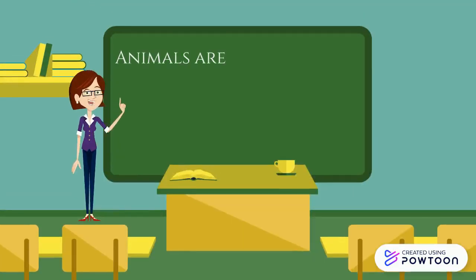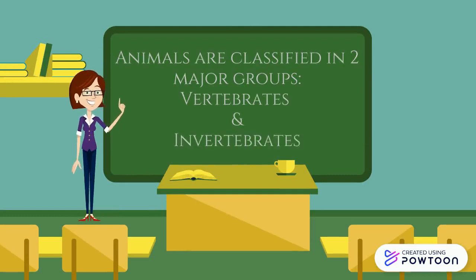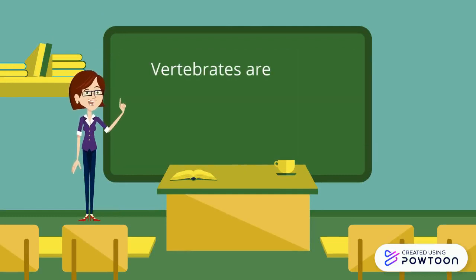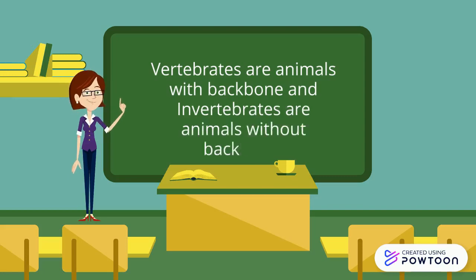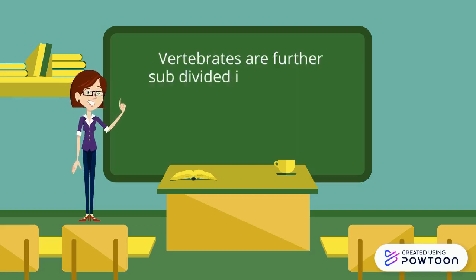Animals are classified in two major groups: vertebrates and invertebrates. Vertebrates are animals with a backbone, and invertebrates are animals without a backbone. Vertebrates are further subdivided into five groups.